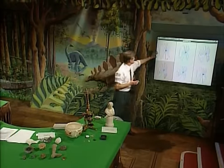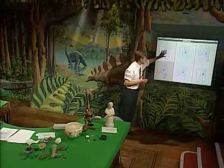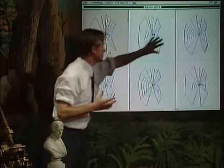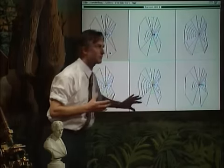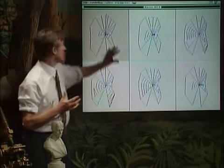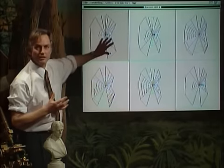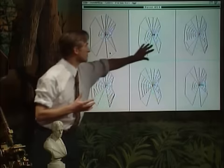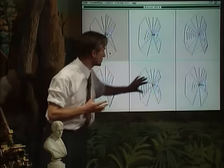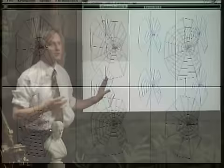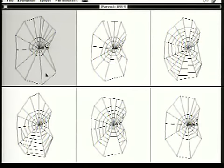That is the parent web. These are the daughter webs — more strictly, that's the web built by the parent spider, and these are the webs built by the daughter spiders. Now, to begin with, we can treat this just as if it was an Arthromorph program.